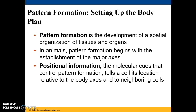Not only is it vital that cells have their specialized structures and functions, they also have to be properly arranged three-dimensionally. Pattern formation is the development of spatial organization of tissues and organs, starting with the establishment of the major axes — differentiating between the right and left side of the body and the anterior and posterior ends. The molecular cues responsible for controlling pattern formation are called positional information, which tells the cell where it is relative to these axes and neighboring cells. This positional information is provided by both cytoplasmic determinants and inductive signals.